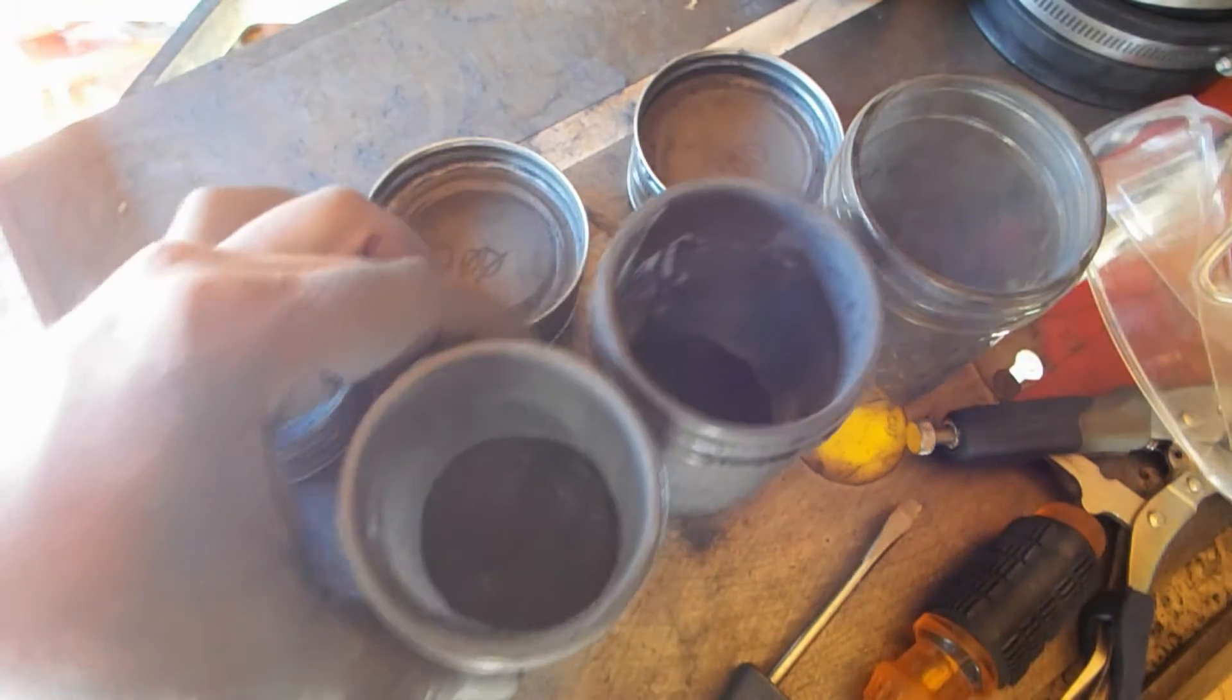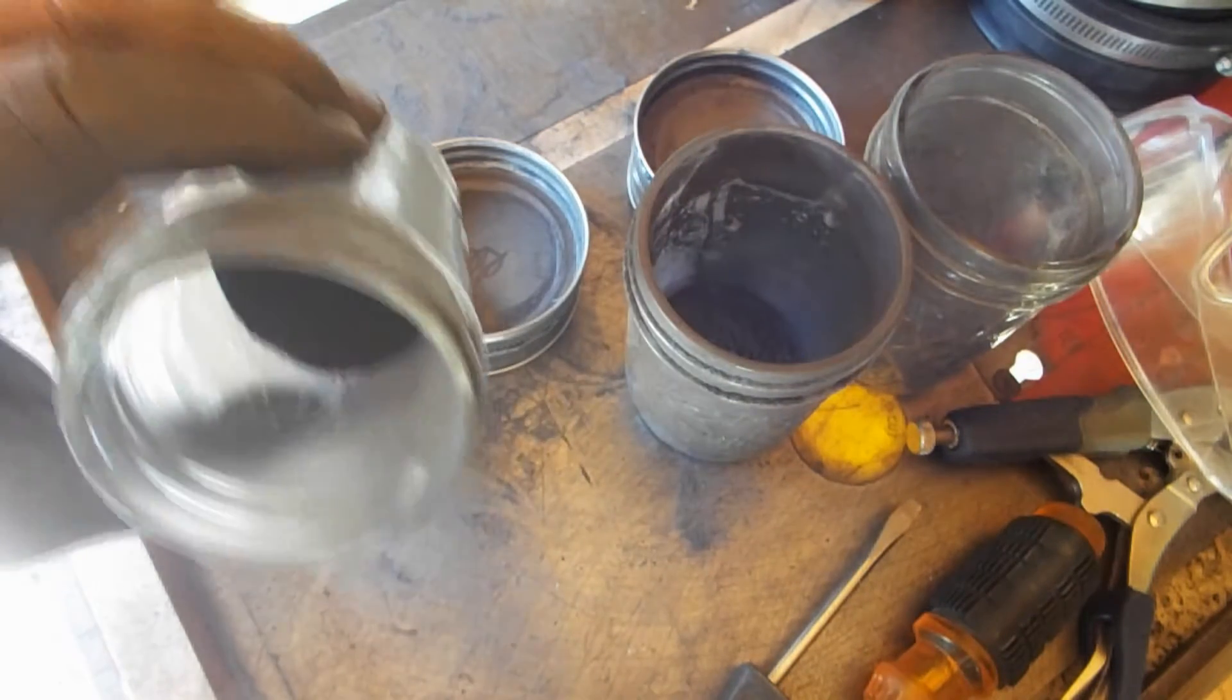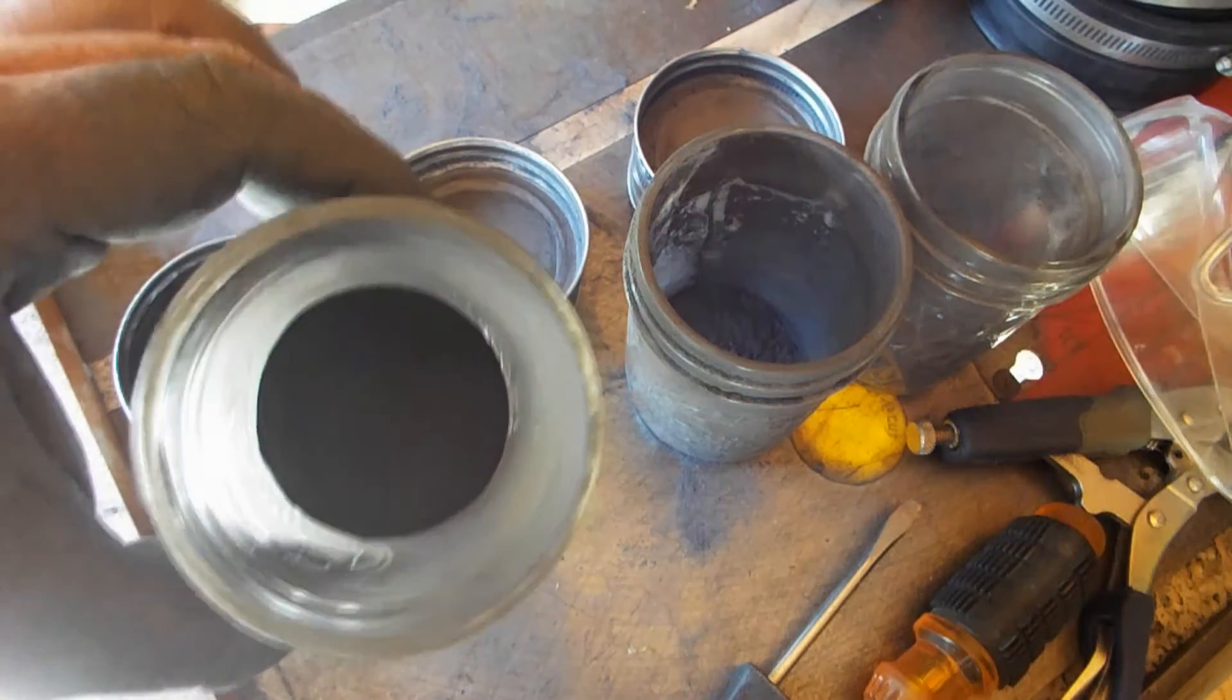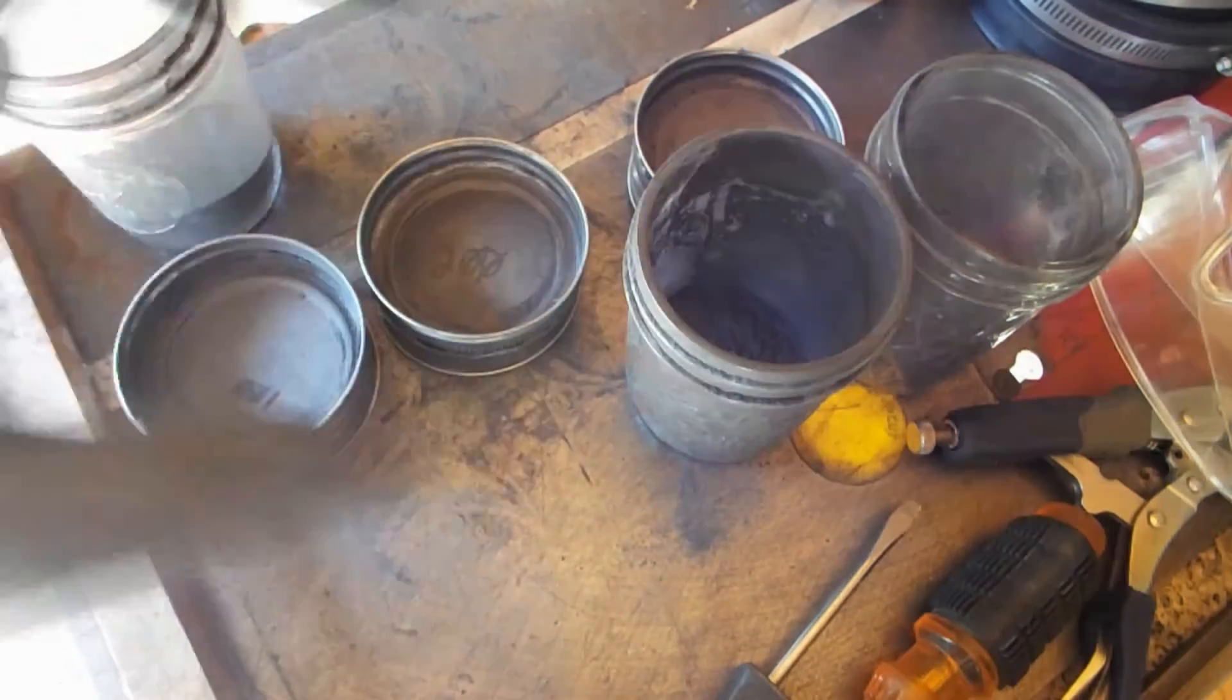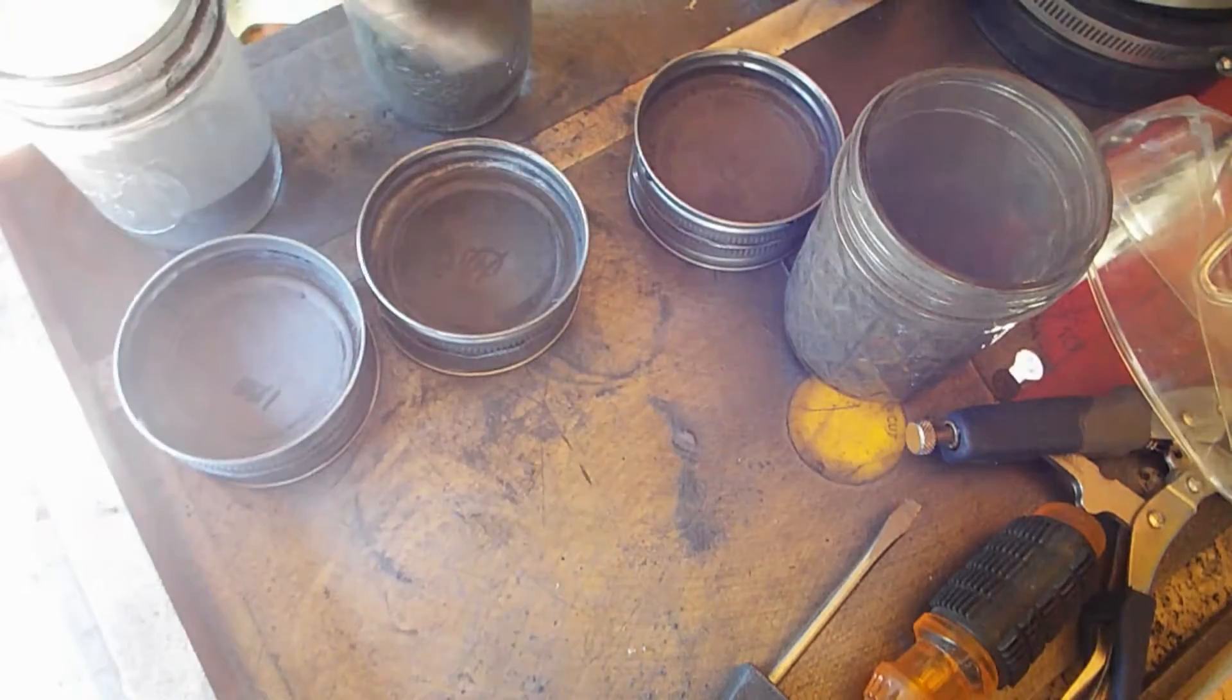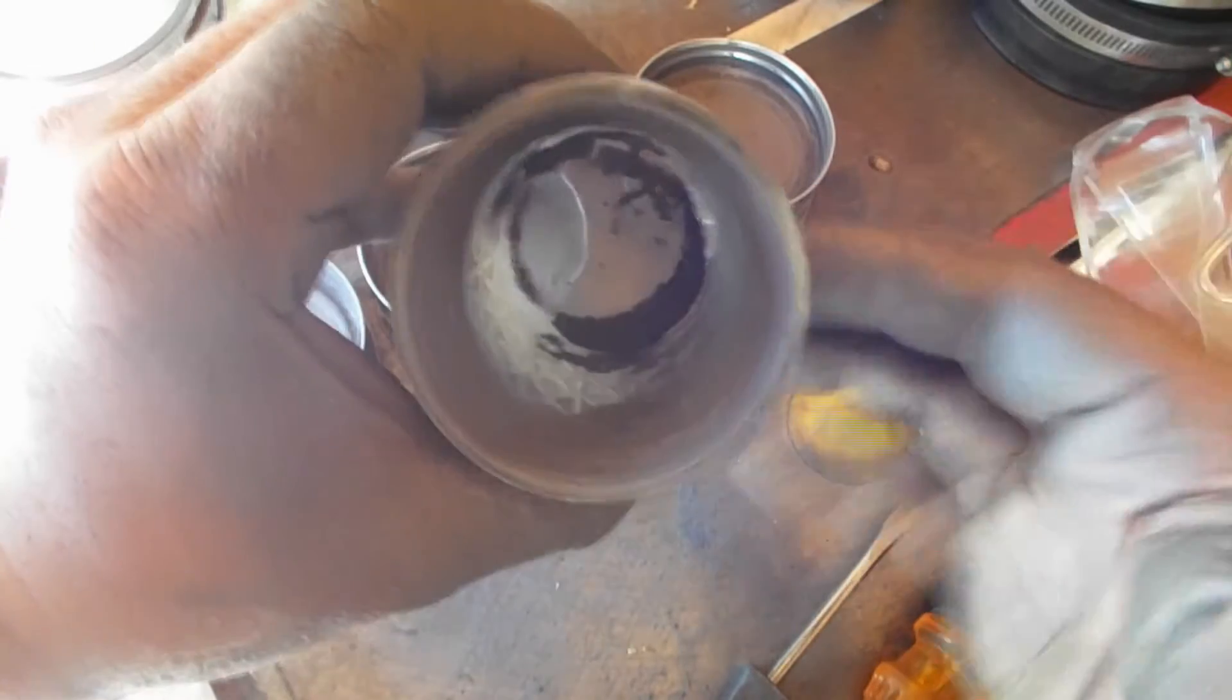So after processing it for about 20-30 minutes by hand, you end up with quite a bit of 100 mesh material. And then I tried filtering that down to 200 mesh, which ended up with a small amount of 200 mesh material. And then the 500 mesh material, it's pretty hard to see, but there's not a whole lot in there.